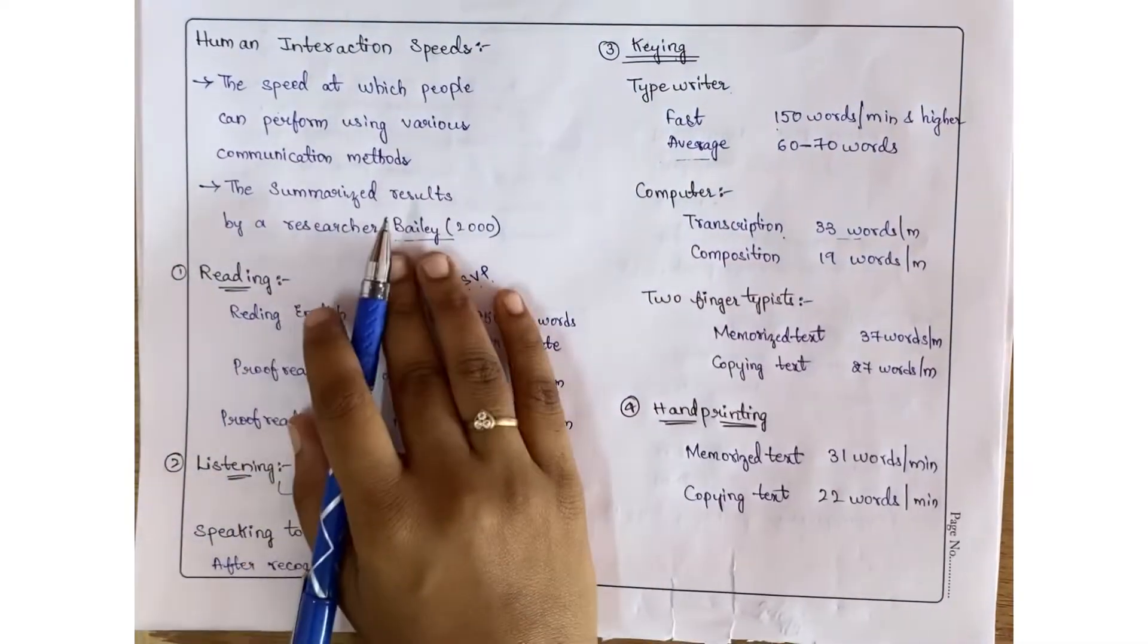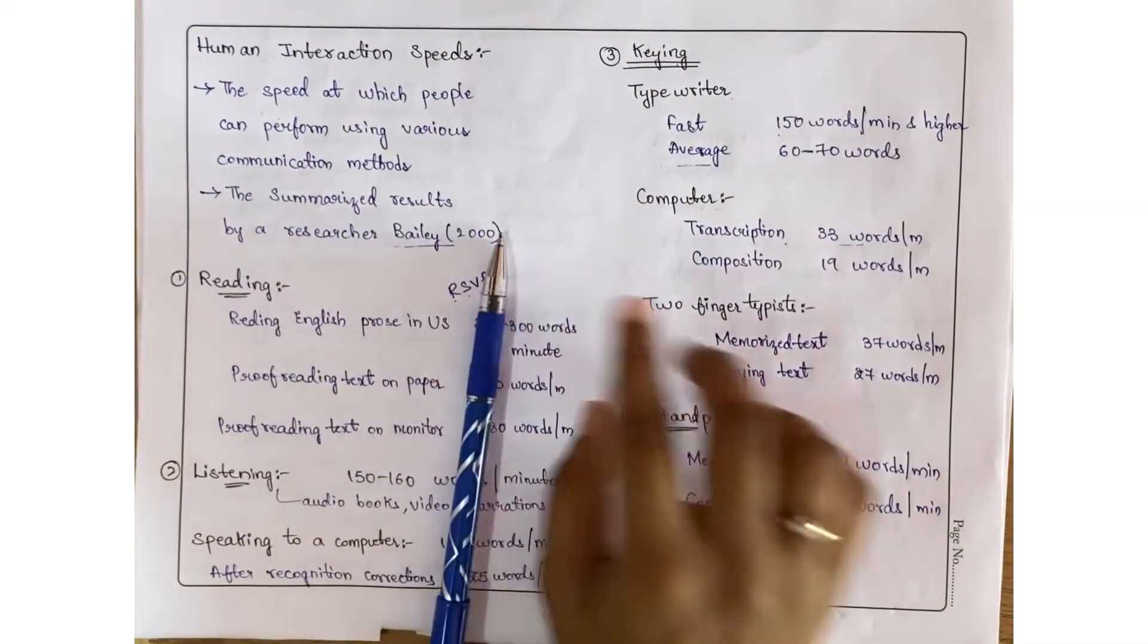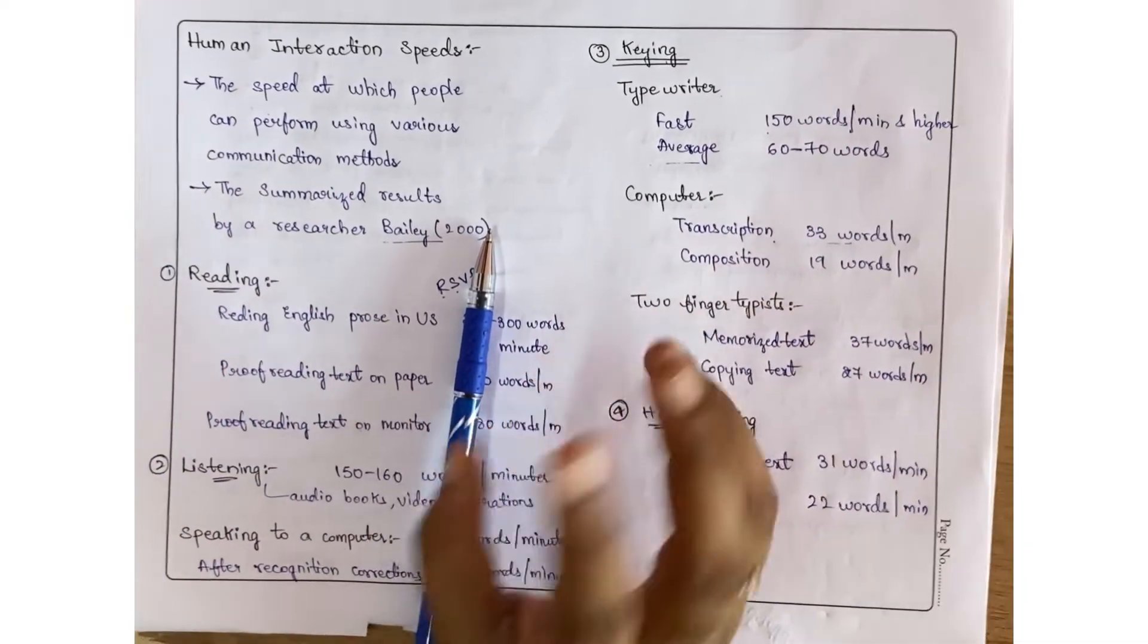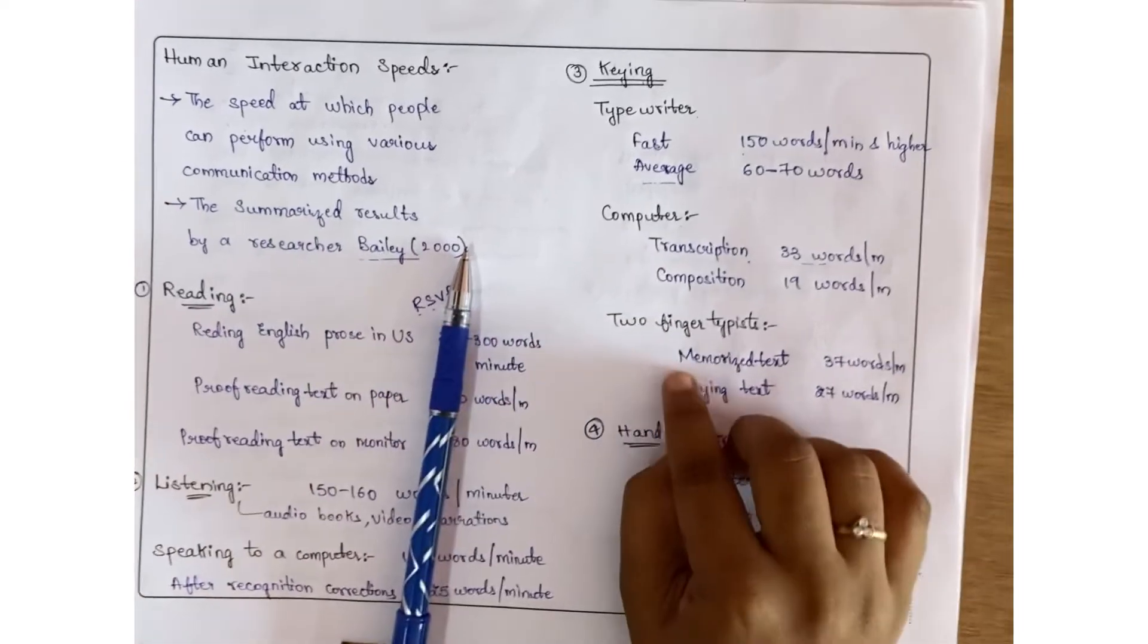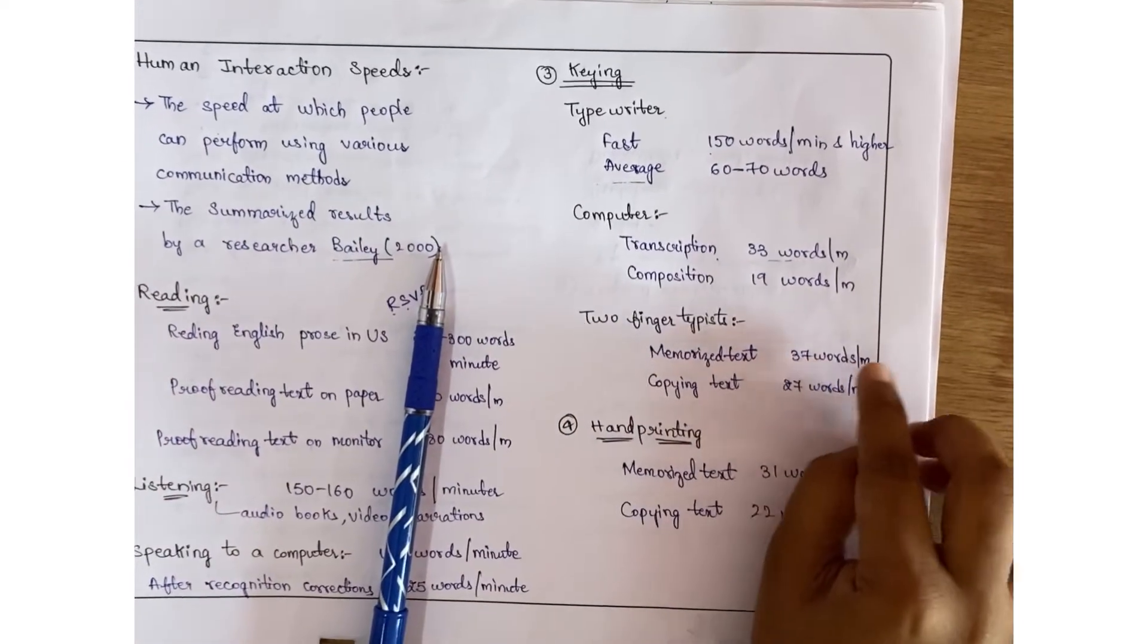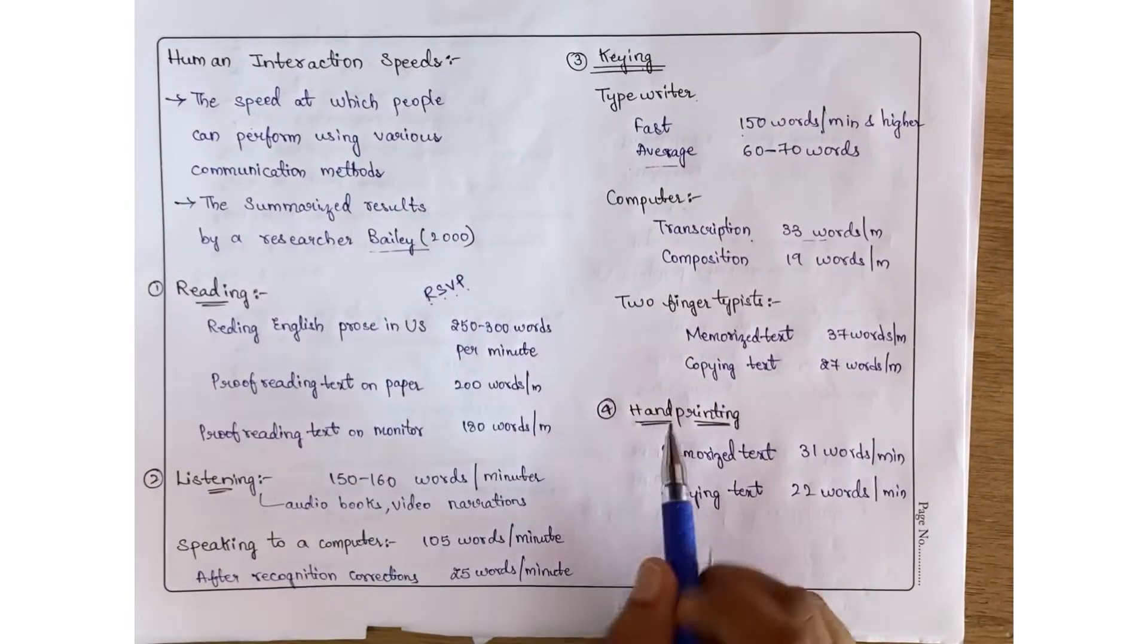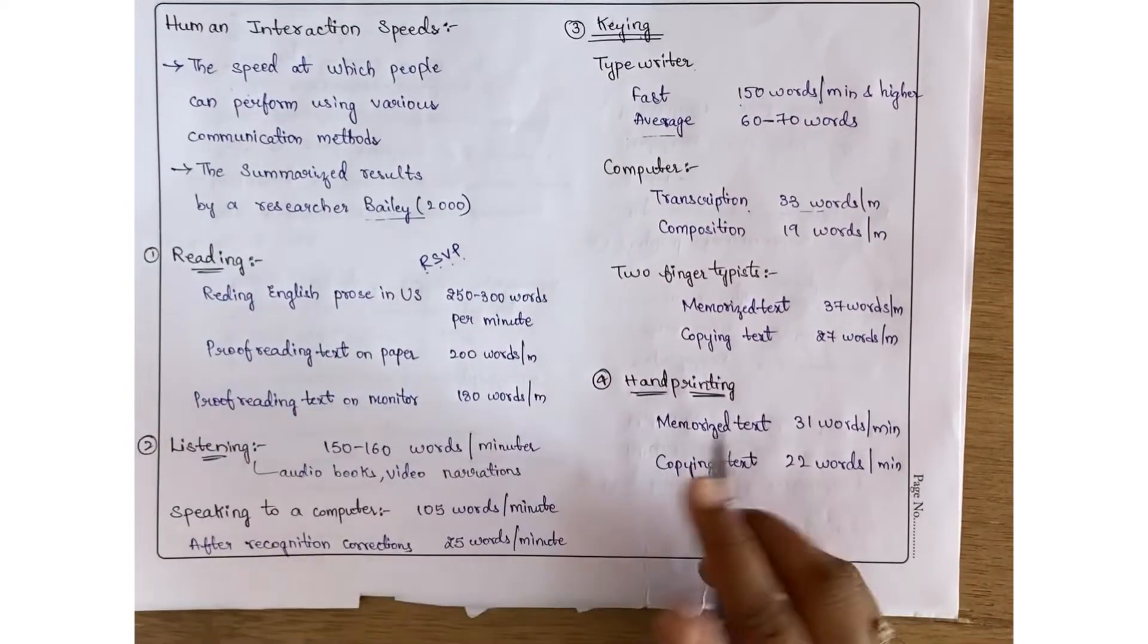Composition on a computer is 19 words per minute. Two-finger typing - some people type with only two fingers - for them, memorized text is 37 words per minute and copying text is 25 words per minute.